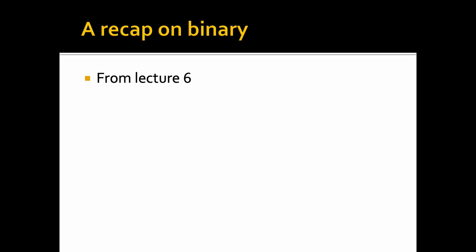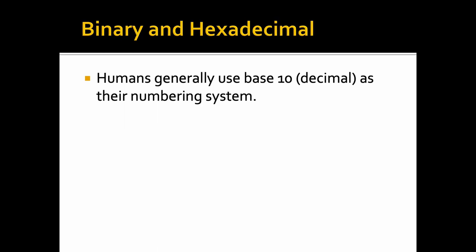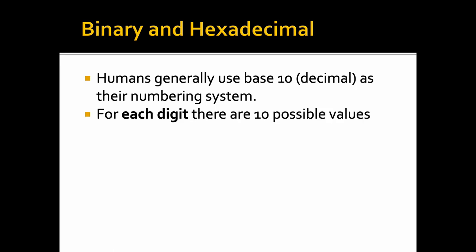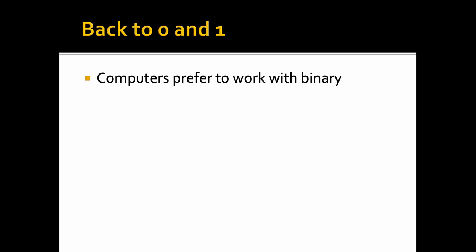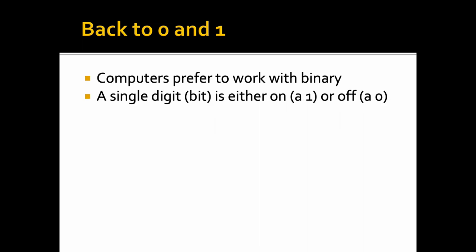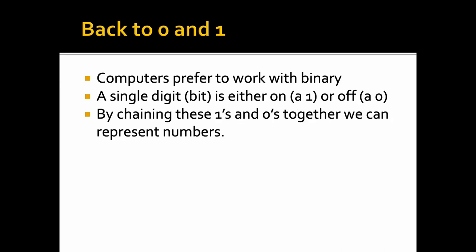Just a quick recap on binary from lecture number six. Humans generally use base 10, decimal, as their numbering system. For each digit there are 10 possible values, 0 through to 9. Once you add 1 to 9 you get 10 — we overflow into the next digit, so the next digit becomes 1 and our current digit resets back to 0. However, computers prefer to work with binary. In binary, a single digit — a bit — is either a 1 or a 0, either on or off.